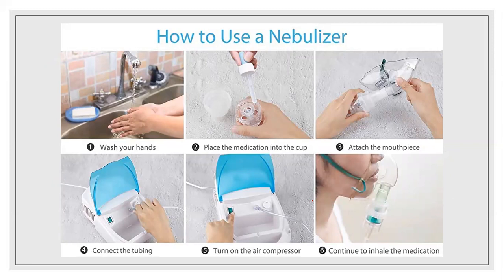So this is the picture showing the step-by-step nebulization procedure. First, wash your hands before going to perform any kind of procedure and dry them well. Then place the medication into the cup — if the medication is in a bottle, use a dropper, or if using respules, directly pour into the cup. Then attach the mouthpiece — this is the nebulization mask — which can be attached directly to the medicine cup. Then connect the tubing: one end connected to the nebulizer and the other end connected to the nebulization mask.